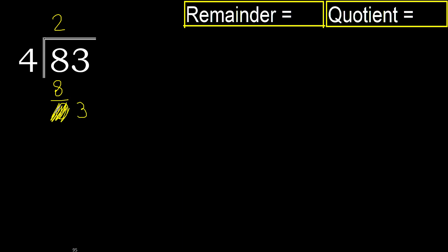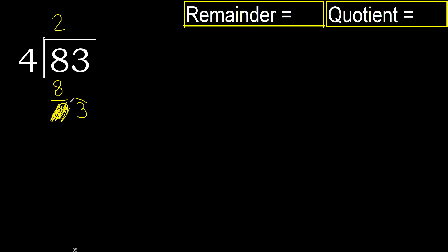Bring down the 0 on this side — 3. 3 is less, therefore next. That is not a number, therefore finish. Finish with this number, therefore 0.